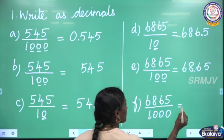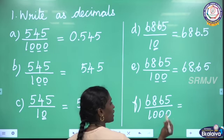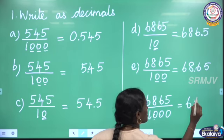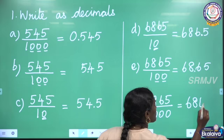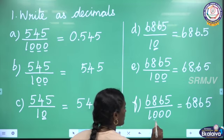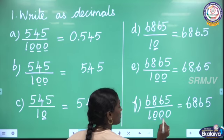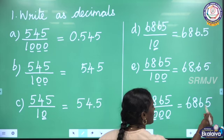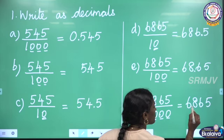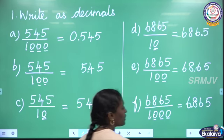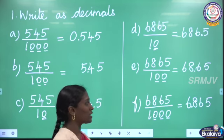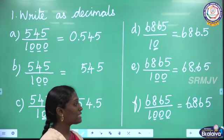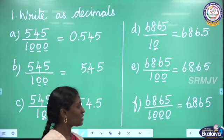The next one: 6865 by 1000. Here 3 zeros are there, so we need 3 decimal places. From the last before 3 digits we have to keep the decimal point. So the answer is 6.865. Is it clear, children?